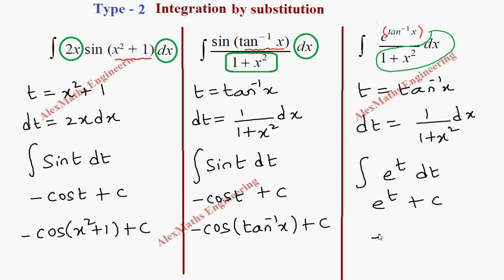Replacing t with tan⁻¹(x), the final answer is e^(tan⁻¹(x)) + c.